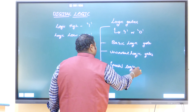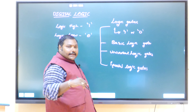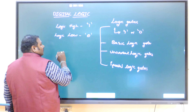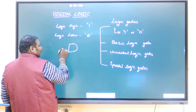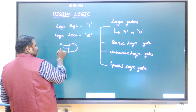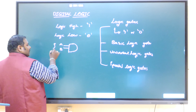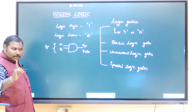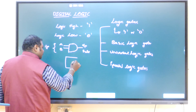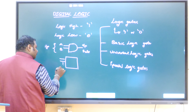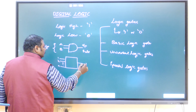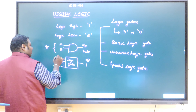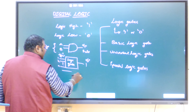A gate can have n number of inputs — maybe two, three, or n inputs — but only one output. For example, considering an AND gate with two inputs A and B: the inputs come from the input side and the output comes from the output side. The basic rule for every logic gate is that the number of inputs can be 1, 2, up to n, but the output must be only 1. That is the basic definition of a logic gate.